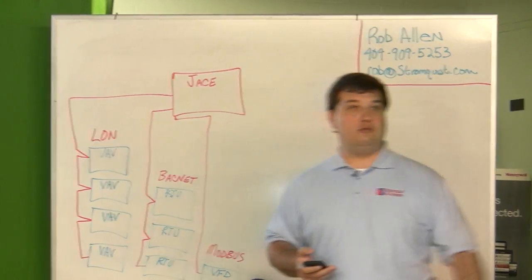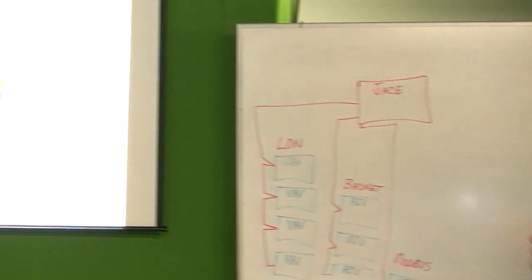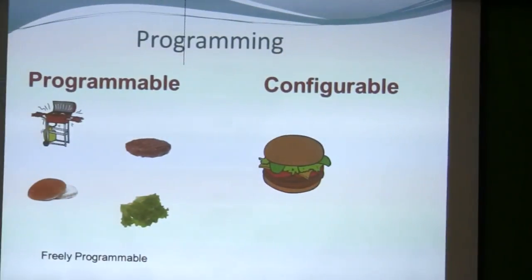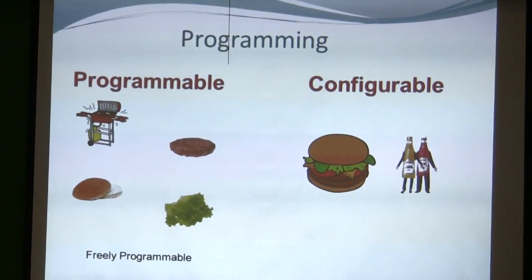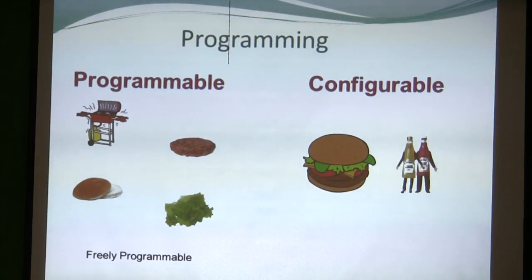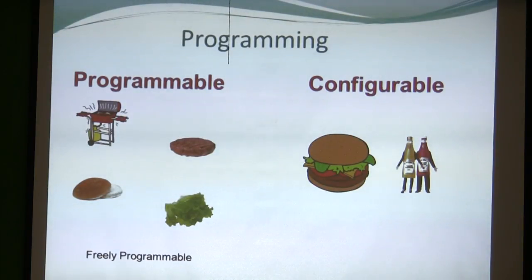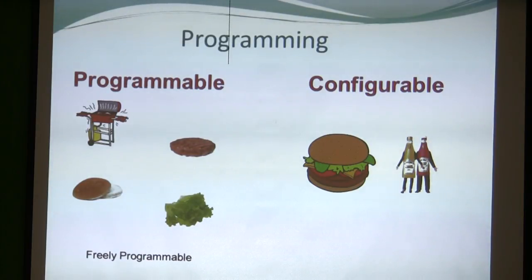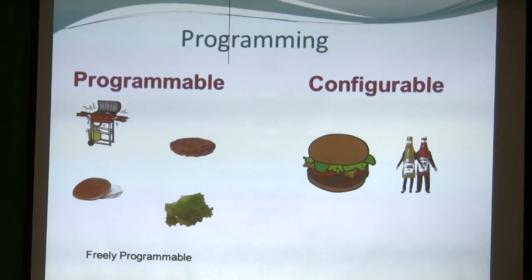Configurable is like walking up to a McDonald's menu board and just choosing — hamburger, chicken sandwich, hot dog — and they ask 'do you want ketchup or mustard?' It's like the auto setting on a camera versus manual. In auto, it does things for you, but if you want to blur the background like professionals do, you have to switch to manual and know a little bit more.